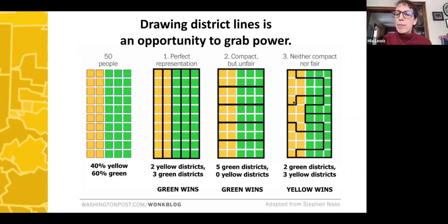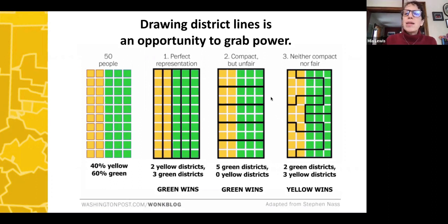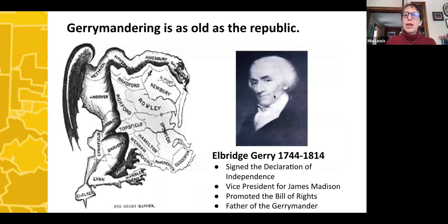In another example, yellows have the power to draw the lines. They've actually packed — taking two districts and forfeiting them to the greens, packing extra greens in, then cracking the remaining greens into the other districts. Even though they're clearly a minority, the yellows end up with three representatives and the greens only two. That demonstrates the power of drawing lines without any rules requiring bipartisan mapmaking or limits on distortions. We call these distortions gerrymandering, and it's as old as the Republic.